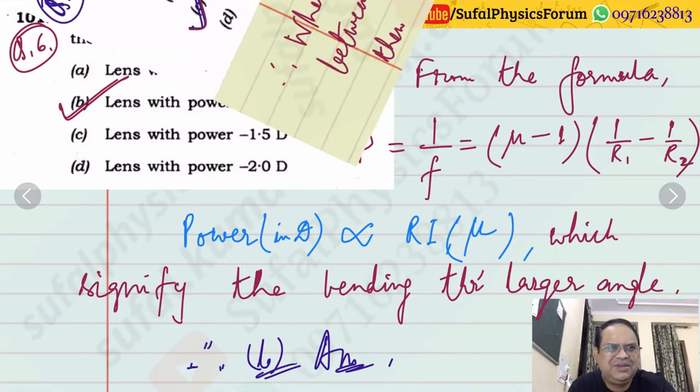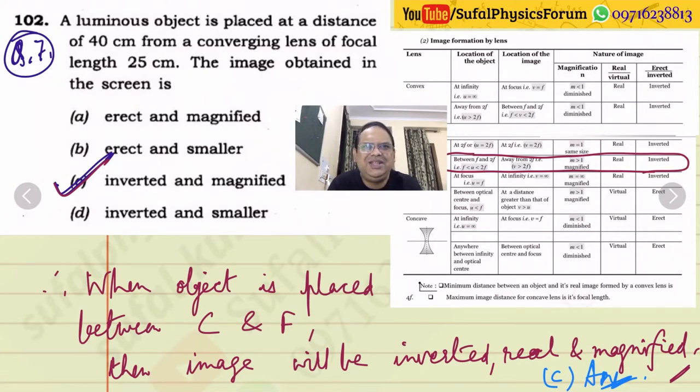Question number 7: A luminous object is placed at a distance of 40 cm from a converging lens of focal length 25 cm. The image obtained on the screen - we need to recall that converging lens means convex lens. Focal length is 25 cm. Center of curvature is the point at 50 cm. According to the data, object is placed between C and F, between center of curvature and F. We have clearly seen that in such cases, real image forms, it's inverted, magnification is greater than 1 so it's magnified.